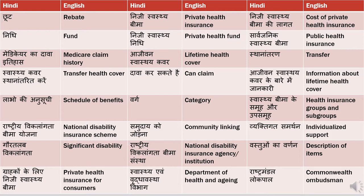'Rashtriya viklaangta Bhima sanstha' means national disability insurance organization or institution. 'Vastuon ka varnan' means description of items. 'Grahakon ke liye niji swastya Bhima' means private health insurance for consumers — 'grahak' means consumers, and 'upabogta' is also an acceptable translation for consumers.